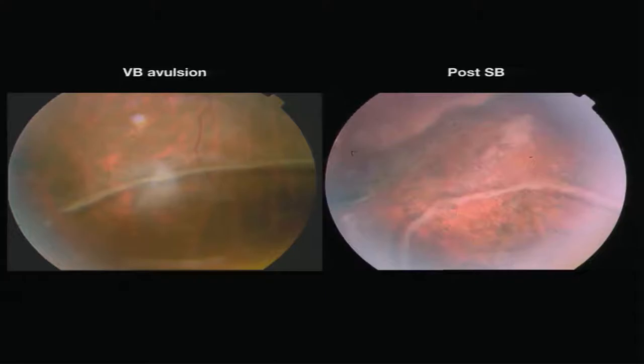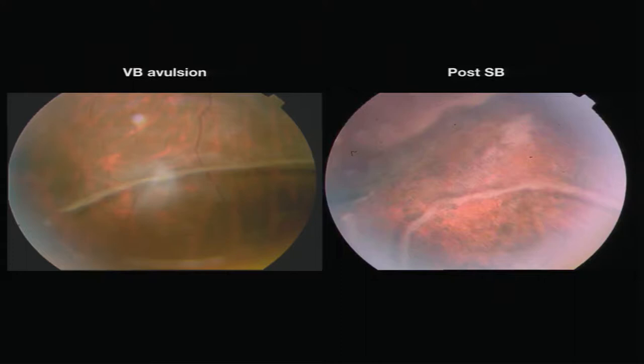This case shows vitreous base avulsion, which may not always indicate the presence of a peripheral retinal dialysis. You have to search for dialysis most commonly in the superonasal and inferotemporal quadrants. Vitreous base avulsion should give you a strong suspicion of dialysis. The next picture shows the same eye after scleral buckling — the patient had peripheral retinal dialysis with localized retinal detachment, with a small buckle effect and vitreous base avulsion visible.